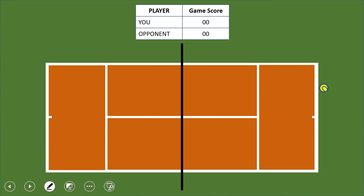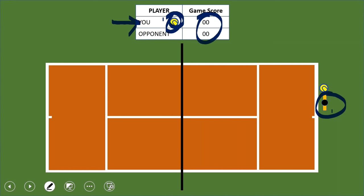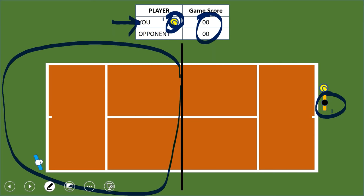Now let's simulate a match to go through the scoring and positions. At zero-zero, when watching tennis on TV you'll see a ball or marker in front of a player's name — that signifies that player is serving. Since you are serving, there's a tennis ball in front of your name. The score is zero-zero, called 'love all.'